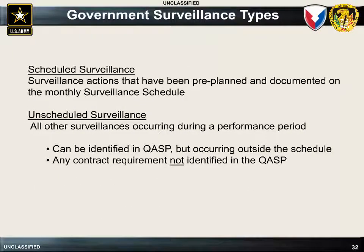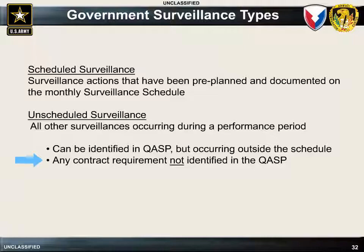Government surveillance can be either scheduled or unscheduled. Scheduled surveillance involves actions that have been preplanned and documented, performed in accordance with the monthly surveillance schedule. Unscheduled surveillance is when the COR performs actions that are not part of the original surveillance schedule but are deemed necessary by the COR. These can be items identified in the QASP but performed outside of the schedule, or actions not identified in the QASP.